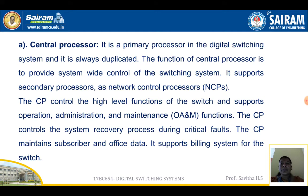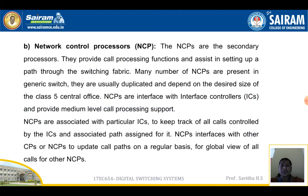The central processor (CP) is the primary processor in the digital switching system and it is always duplicated. The function of the central processor is to provide system-wide control of the switching system. It supports secondary processors such as network control processors. The CP controls the high-level functions of the switch and supports operation, administration, and maintenance (OA&M) functions. The CP controls the system recovery process during critical faults and maintains subscriber and office data. It also supports the billing system for the switch.